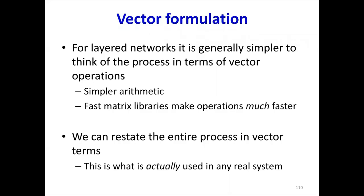Welcome to part two of lecture four, where we will discuss the vector formulation for backpropagation. So far, we've been treating each of the neurons as an individual computational element and each weight as a separate scalar value. For layered networks, it's generally just simpler to think of the process in terms of vector operations. The arithmetic is simpler, and we can take advantage of fast matrix libraries and GPUs to speed up the computation a whole lot. This means that we can restate the forward and backward processes in terms of vector operations, and in fact, this is what any real system implements.